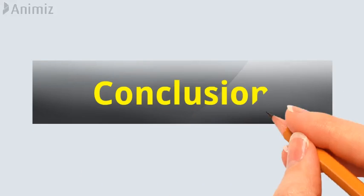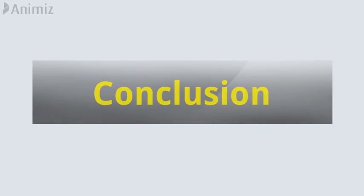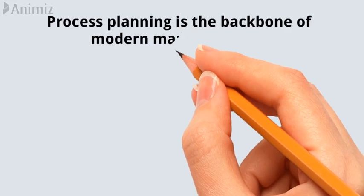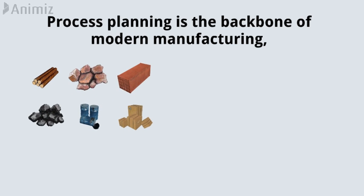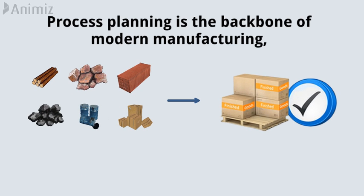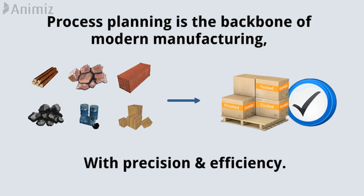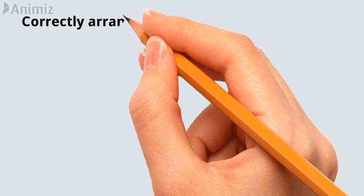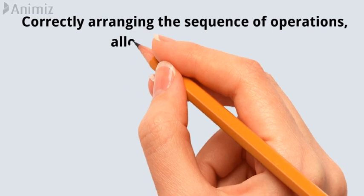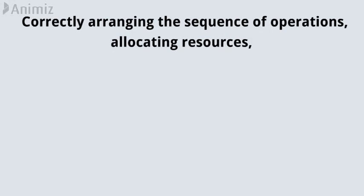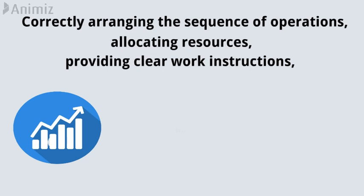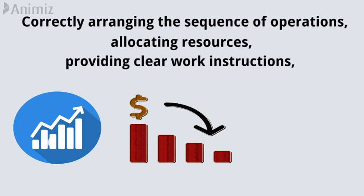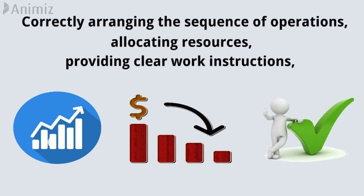Conclusion: Process planning is the backbone of modern manufacturing, facilitating the transformation of raw materials into finished products with precision and efficiency. By correctly arranging the sequence of operations, allocating resources, and providing clear work instructions, process planning enhances productivity, reduces costs, and ensures consistent product quality.